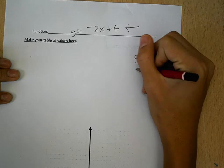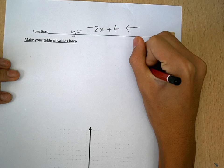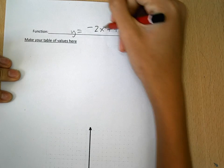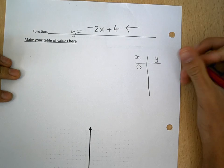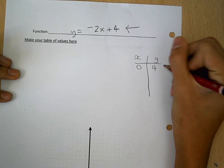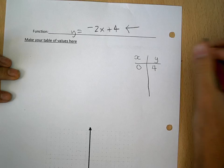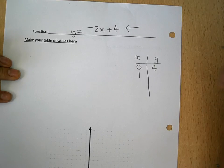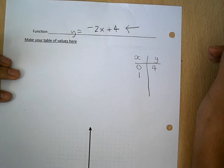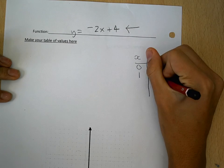I'm going to put 0. Negative 2 times 0 equals 0 plus 4, so y equals 4. As I increase the numbers, I'll put this as 1. Negative 2 times 1 equals negative 2, and then negative 2 plus 4 equals 2.